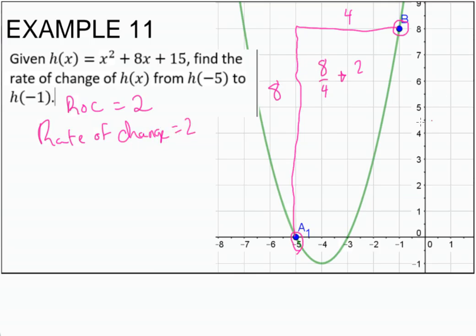Now we can also do this using the slope formula, or in this case, h of b minus h of a, all over b minus a. I should be using lowercase notation here.